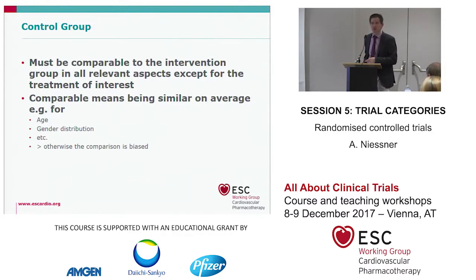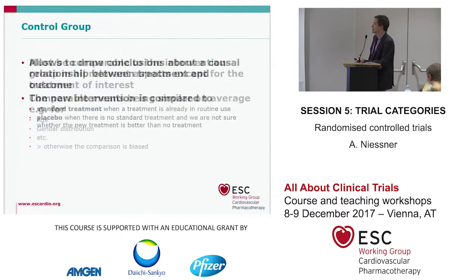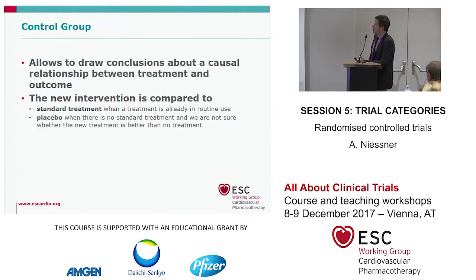The control group must be comparable to the intervention group in all relevant aspects, except for the treatment of interest. Comparable means being similar on average, for example, for age and gender distribution. Otherwise, we have a bias in the comparison, and it allows us to draw conclusions about the causal relationship between treatment and outcome.